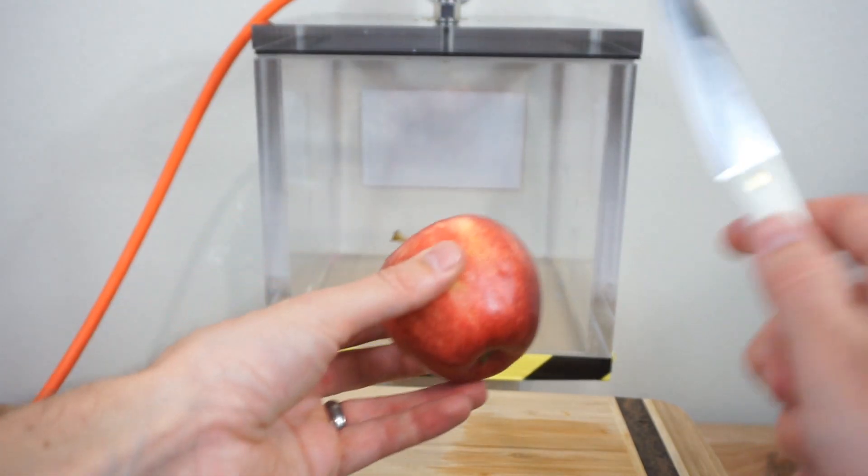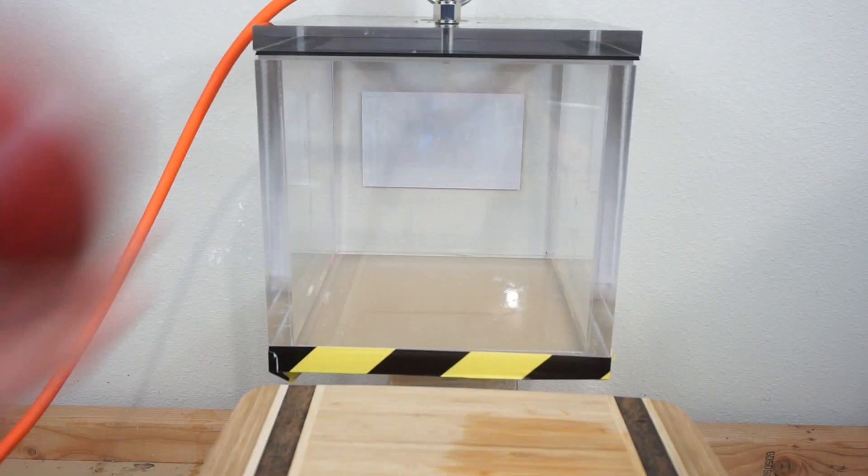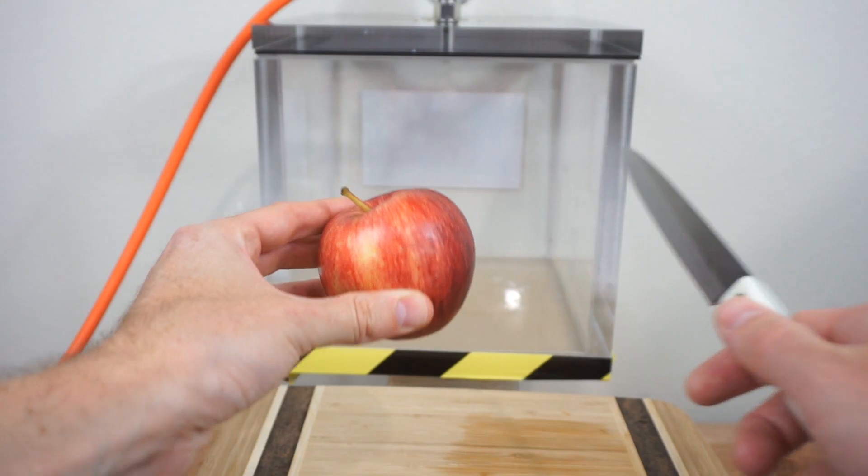So have you ever noticed when you cut an apple in half, after a few minutes the top of it has turned brown? Well today we're going to be testing if that's because it's exposed to air.